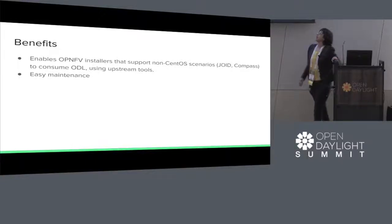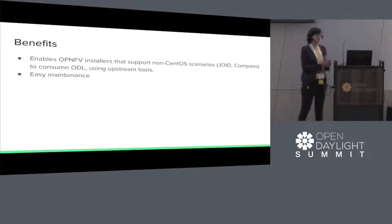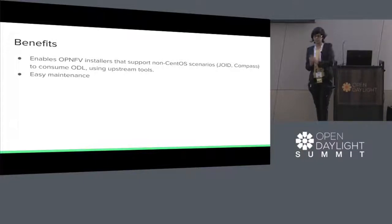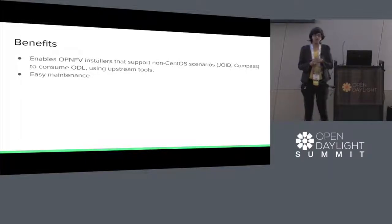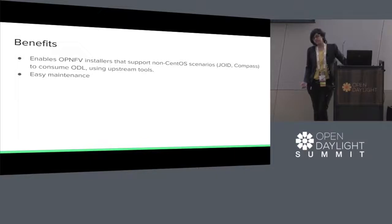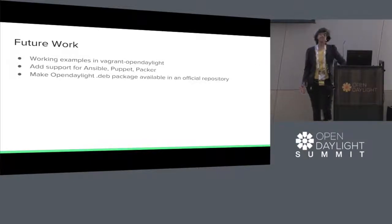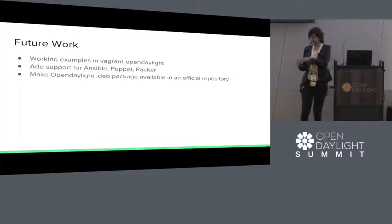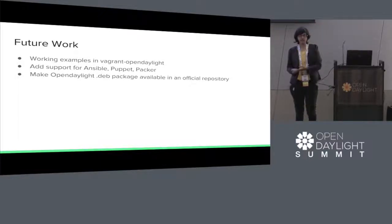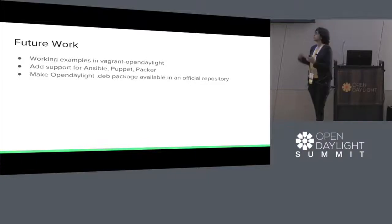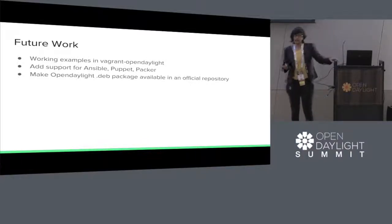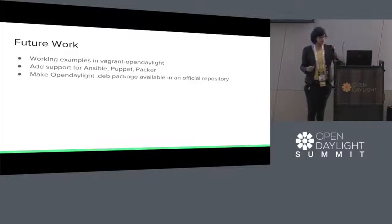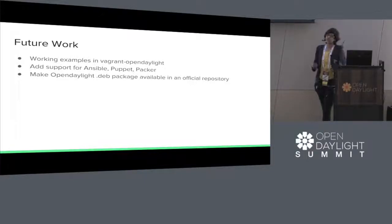The benefits of having a .deb package are that OPNFV installers that support Ubuntu-like OSs can use this and use the upstream tools available. The .deb is available upstream and will be easier to maintain. For future work: I've just currently built the .deb files — I haven't integrated it yet into Puppet and Ansible, and that's what I'll be working on next. I'll also provide examples in Vagrant OpenDaylight and make OpenDaylight .deb available in an official repository.